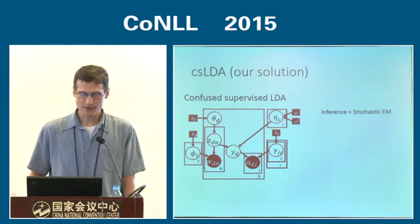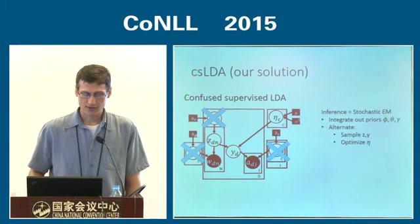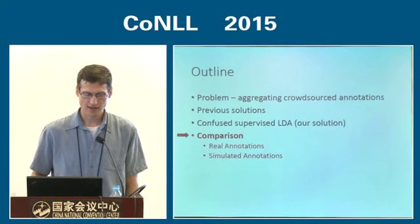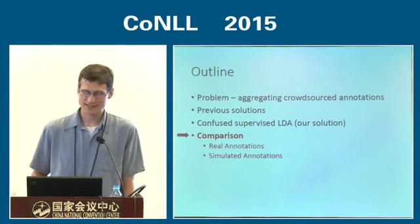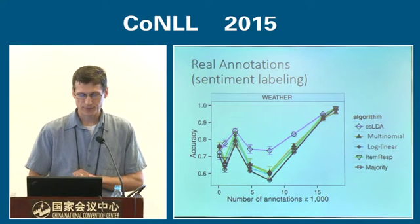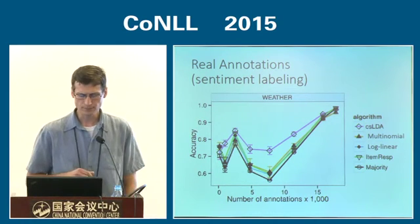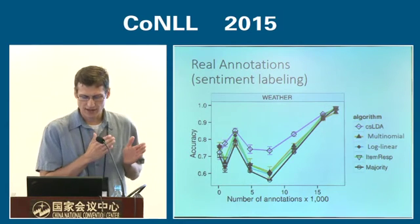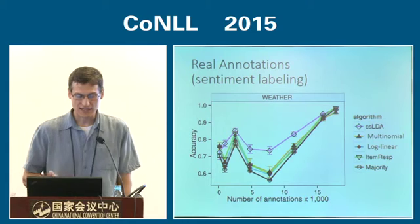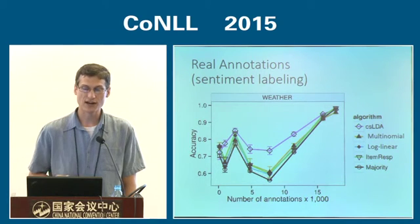For inference we use stochastic EM, analytically integrating out conjugate priors we don't need. We alternate between sampling our discrete variables Z and Y, and optimizing eta. We then run these models on various datasets. Here's a CrowdFlower dataset of tweets about the weather, labeled as positive, negative, neutral, or not weather-related. We chart learning curves by incrementally adding annotations, training the model, and checking inferred labels against a gold standard.